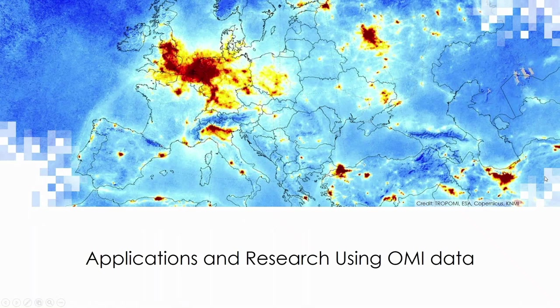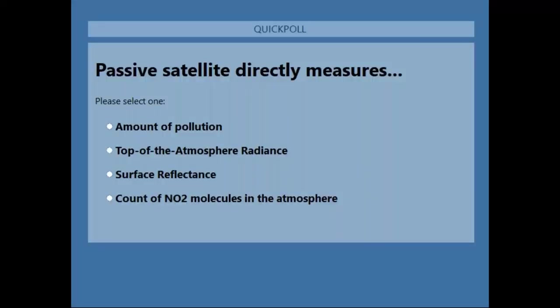Before I move on to the next section, I'm going to give a couple of polls. The first: what does a passive satellite directly measure? The amount of pollution, top of the atmosphere radiance, surface reflectance, or the count of NO2 molecules in the atmosphere? It looks like we have a tie between top of the atmosphere radiance and surface reflectance.